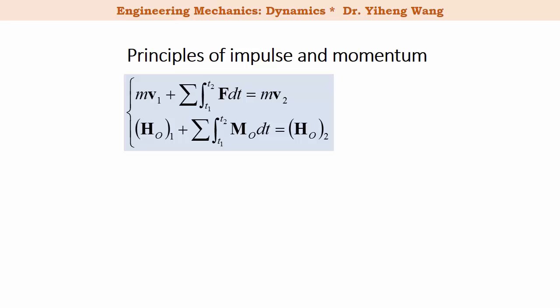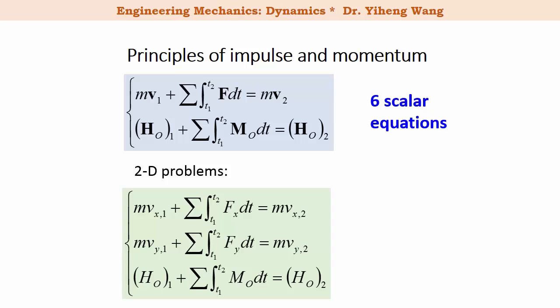Similarly for particle kinetics, we have two vector equations of principles of impulse and momentum: one for linear impulse and momentum, and the second for angular impulse and momentum. For a 3D problem these become six independent scalar equations, and for a 2D problem they become three independent scalar equations — the first and second being principles of linear impulse and momentum in the x and y directions, and the third being the principle of angular impulse and momentum about an arbitrary point O within the x-y plane.